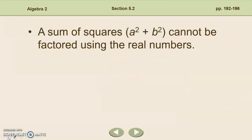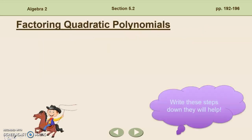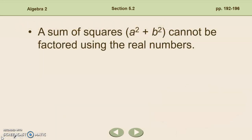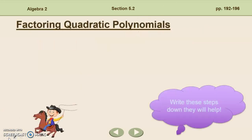A sum of squares cannot be factored using real numbers. We will get to this later when we talk about imaginary numbers. But for right now, if it has a plus sign between two perfect squares, we can't factor it using real numbers. Keep that in mind.